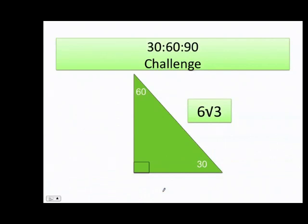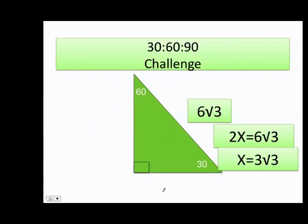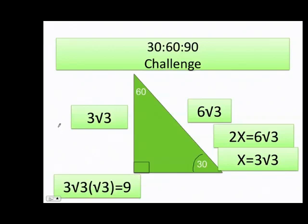Let's see if you can do this one. The hypotenuse is 6 times the square root of 3. Remember the hypotenuse is 2x, so x equals 6 divided by 2 — my 30-degree angle is 3 times the square root of 3. Finally, I multiply that value times the square root of 3, which equals 9.